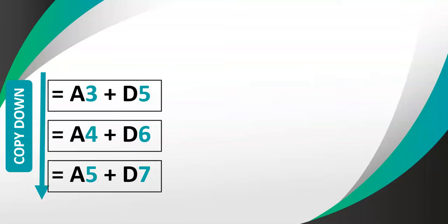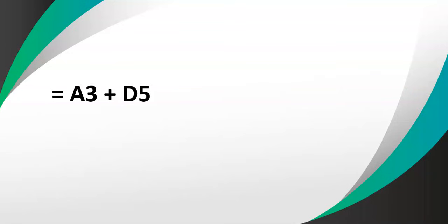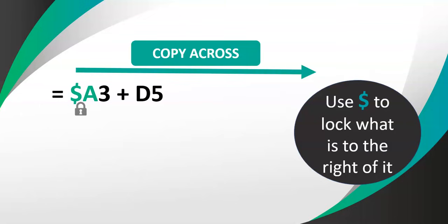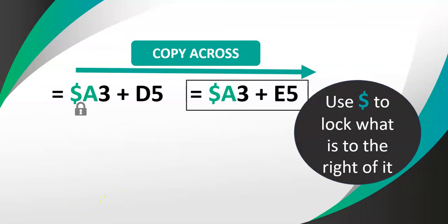So that's the nature of copying formulas across and down. For absolute cell referencing we use the dollar symbol to lock whatever is to the right of it — wherever you place that dollar symbol, what's to the right of it will be locked. So if I put a dollar next to the A, that dollar locks that A. If I copy across one block, you'll notice the formula keeps the A — it doesn't allow it to change. But the other cell reference, D5, did change to E5 because it wasn't locked.